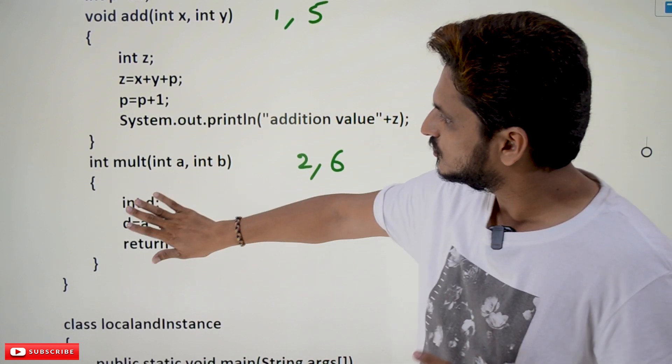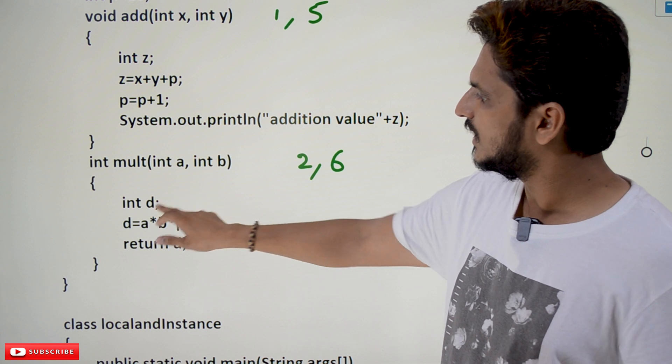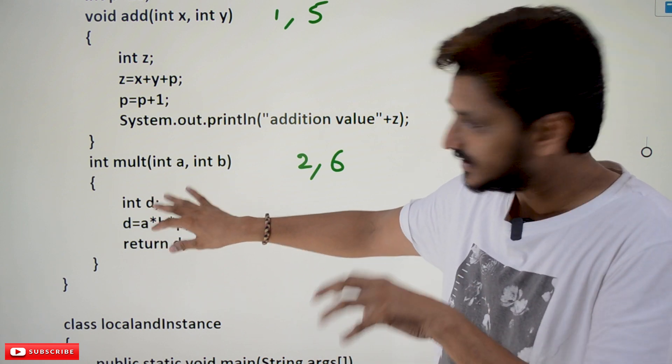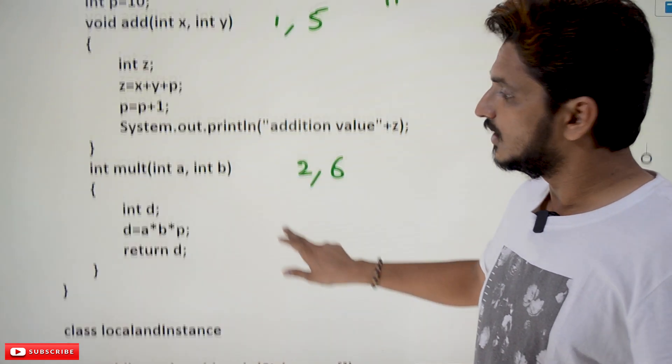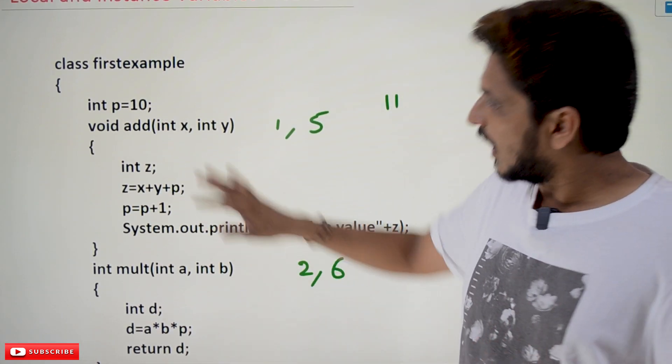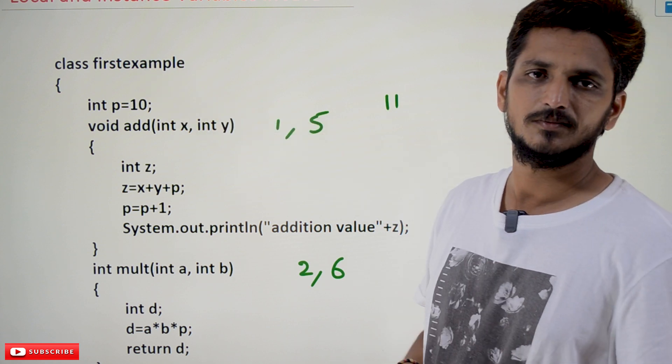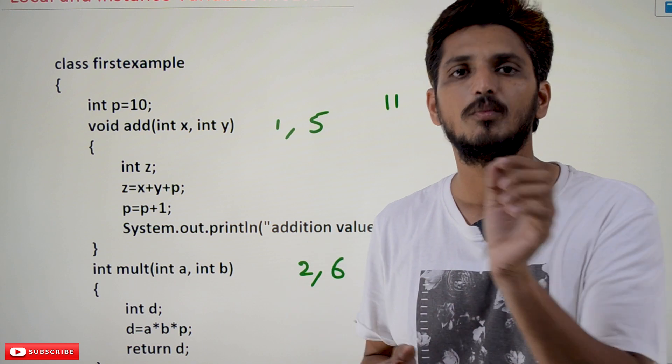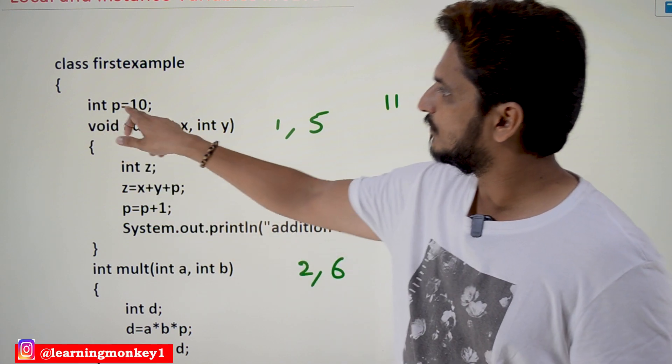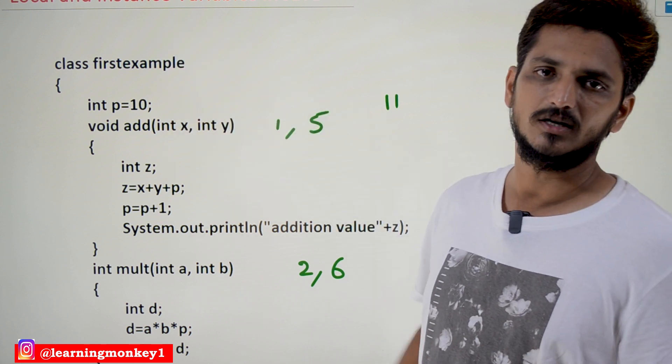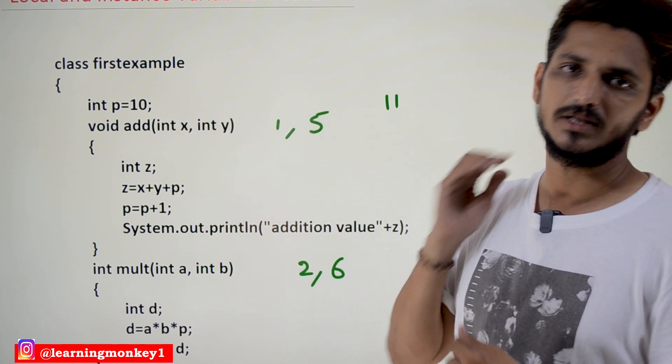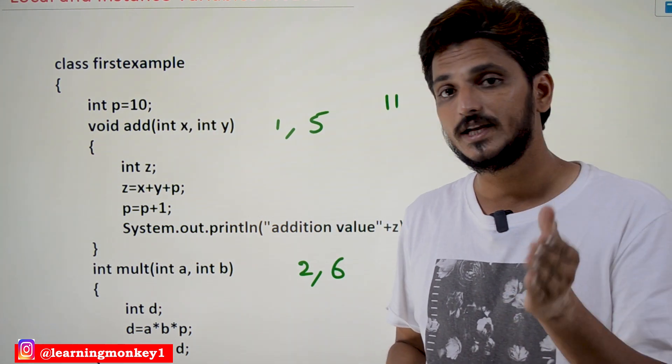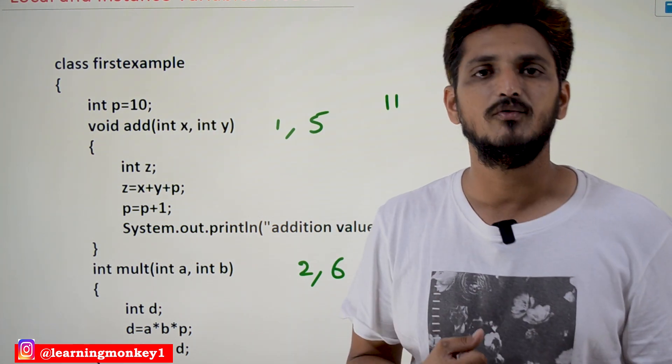Similarly, the local variables that belong to this method are int a, b, d. We can use these variables inside, whenever this method is going to be executed. If you define a variable outside these methods, that we call it as instance variables, or simply we call it as global variables. Int p is equal to 10, which is defined above the methods, add method and multiply method. This variable, we call it as instance variable, or simply, we can go with global variable.